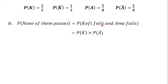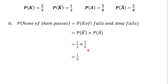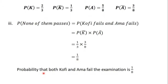The probability that Kofi fails, P(K complement), is 1 divided by 3. The probability that Amma fails, P(A complement), is 3 divided by 8. So we have 1 divided by 3 times 3 divided by 8, which gives us 1 divided by 8. Therefore, the probability that both Kofi and Amma fail the examination is 1 divided by 8.